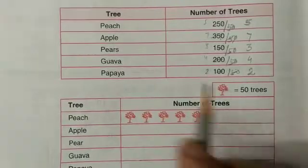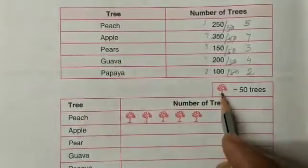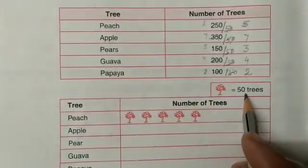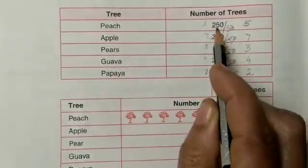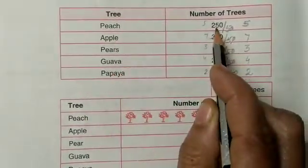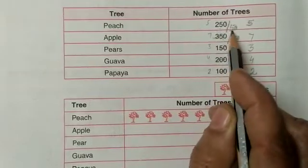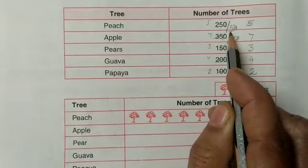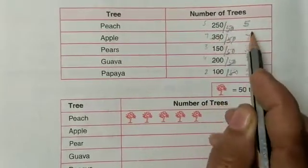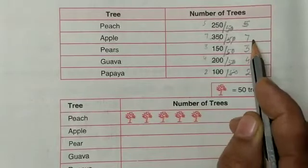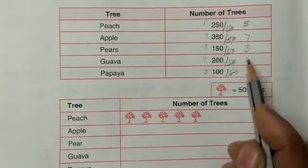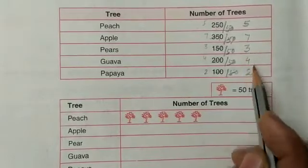It was simple. One tree is equal to 50, so peach trees are 250. We divide by 50 and we get 5. Likewise, apple trees give 7, pears give 3, guava gives 4, and papaya gives 2.